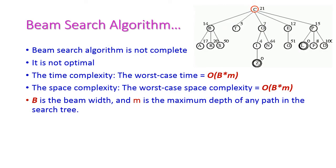Now let us see the evaluation of beam search algorithm. First, beam search is not a complete algorithm — it is an incomplete algorithm. For example, if the beam size is 2, then only two nodes will be selected in the open list. If there is no goal state among them, we cannot reach the goal. Hence it is called an incomplete algorithm.